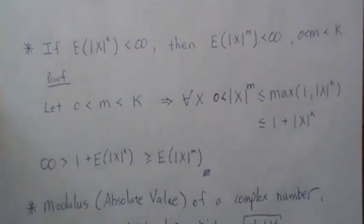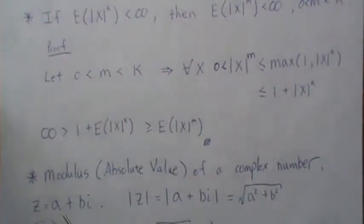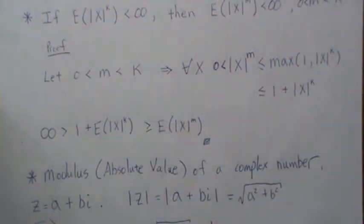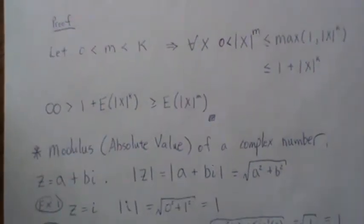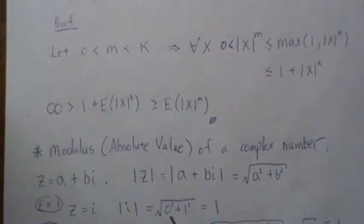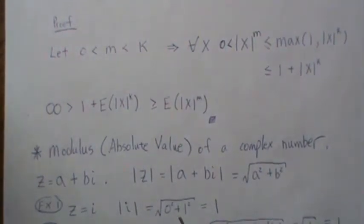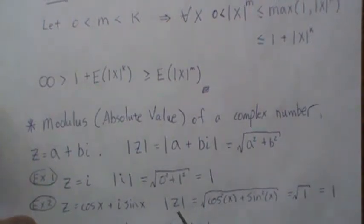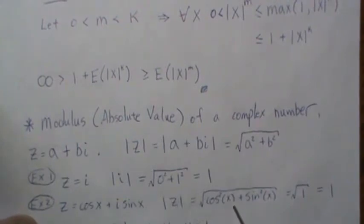The modulus — often called the absolute value — of a complex number is defined as follows: if z = a + bi, then |z| = √(a² + b²). It's the Euclidean distance from the origin. For example, |i| = √(0² + 1²) = 1. And if z = cos(x) + i·sin(x), then |z| = √(cos²(x) + sin²(x)) = √1 = 1.